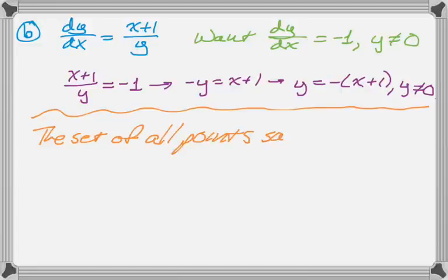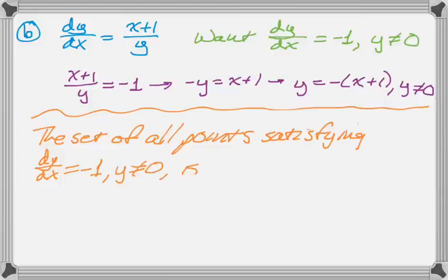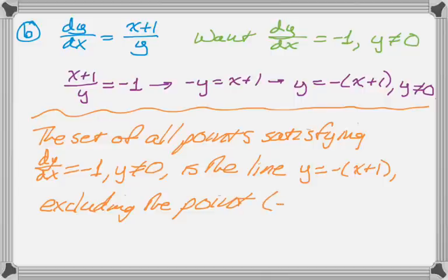So let's write this up. The set of all points in the plane that satisfy dy/dx equals negative 1 with y not equal to 0. It's a line, and it's the line y equals negative quantity (x+1), but we're going to exclude the point (-1,0). So that would be my description. I guess you could also say it's two rays pointed in either direction. I thought that was the easiest way to describe it.